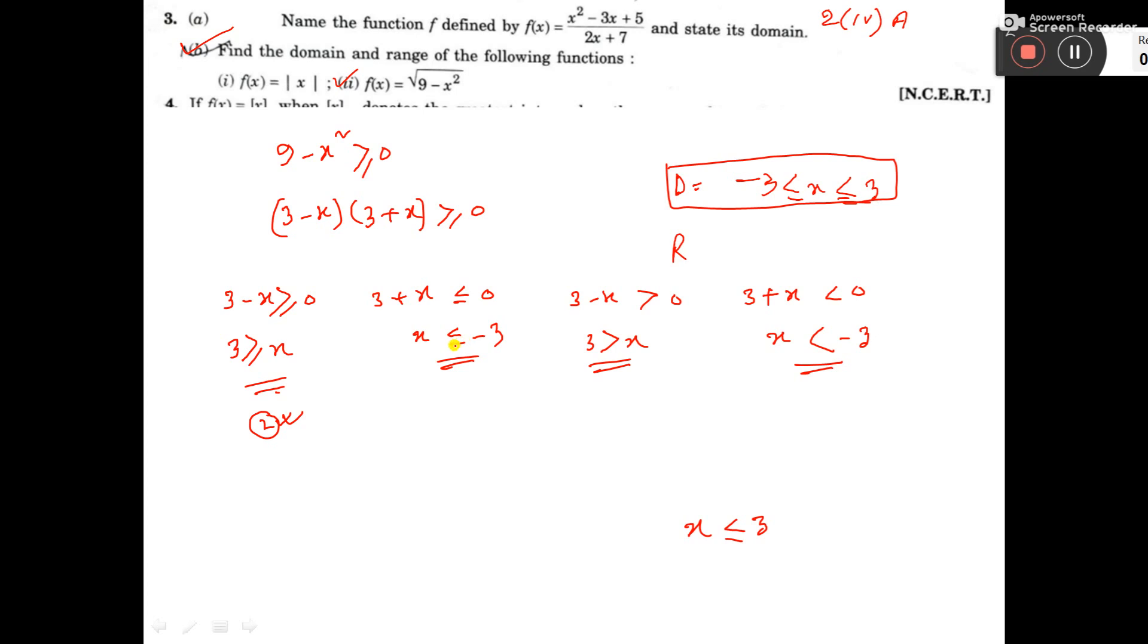Now, see here. If I take from here, x less equal to minus 3. That means minus 4 we can take. If we take minus 4 here, so minus 4 whole square, that is equal to 16. So 9 minus 16, that is minus 7. So minus 7 is not greater than 0. So this relation is not correct.